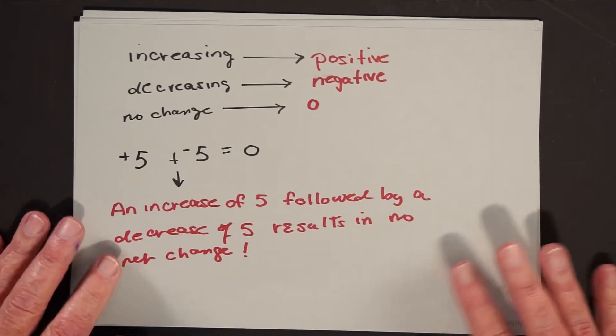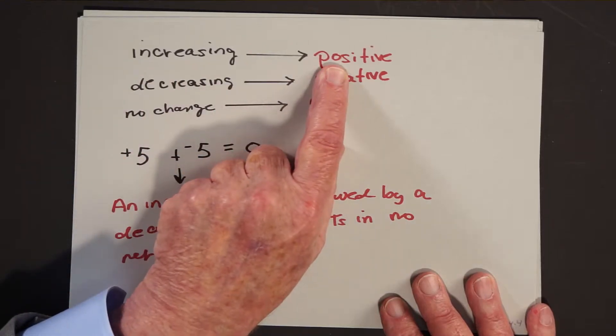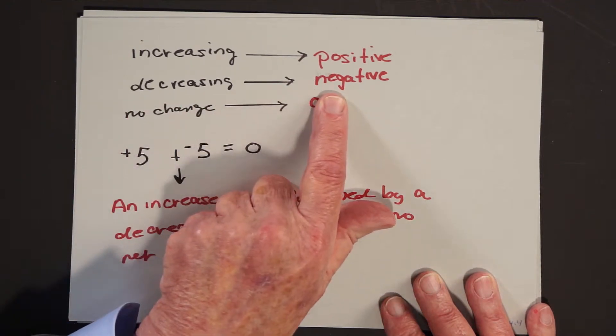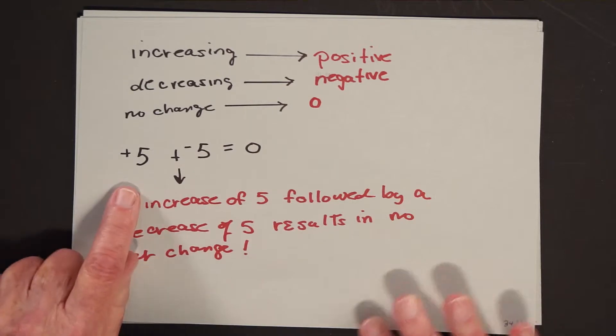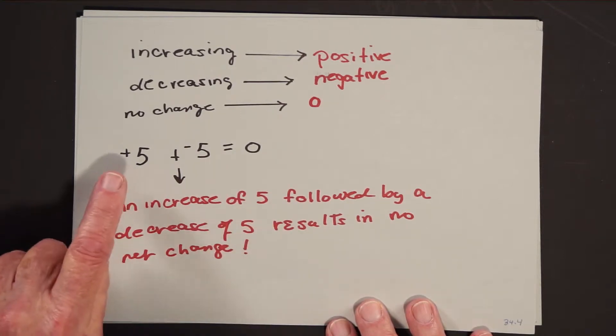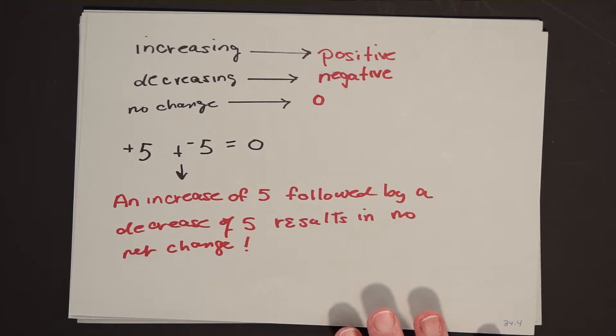So what would happen now is, given that we're talking about a rate of change, a rate of change could be increasing, and we'll elect to call that positive. The key point is we're not allowed to use words when we're dealing with math. Decreasing just meant negative, and no change at all meant zero. For example, when I saw something like positive five plus negative five equals zero, to me all that meant was if something increases by five and then is followed by a decrease of five, the net result is that there's no change.